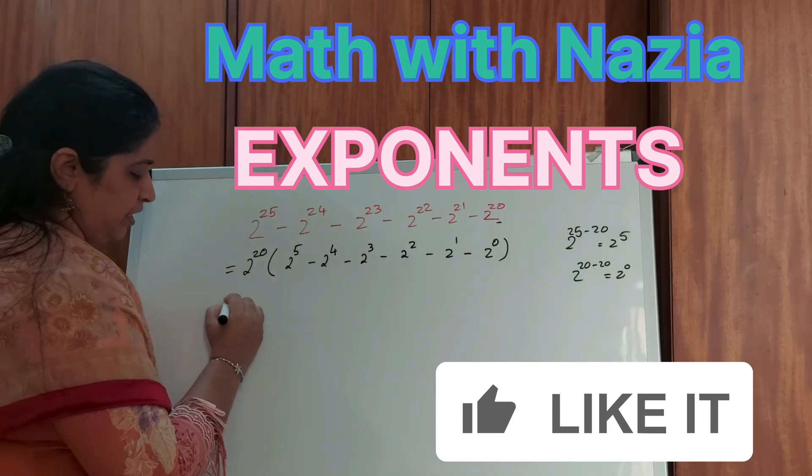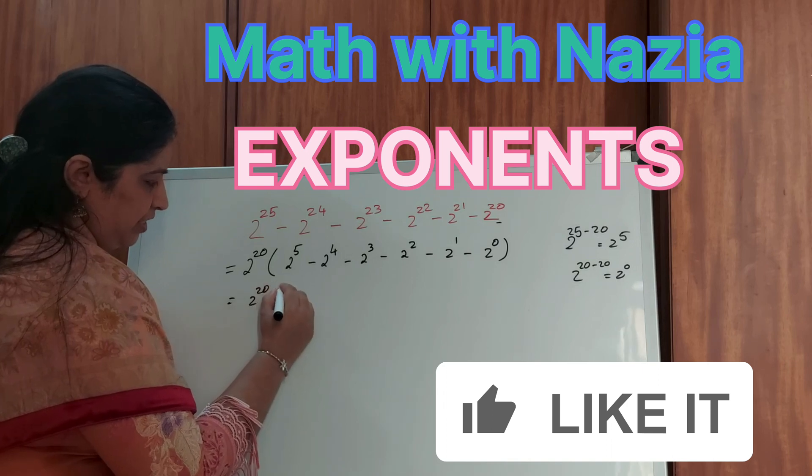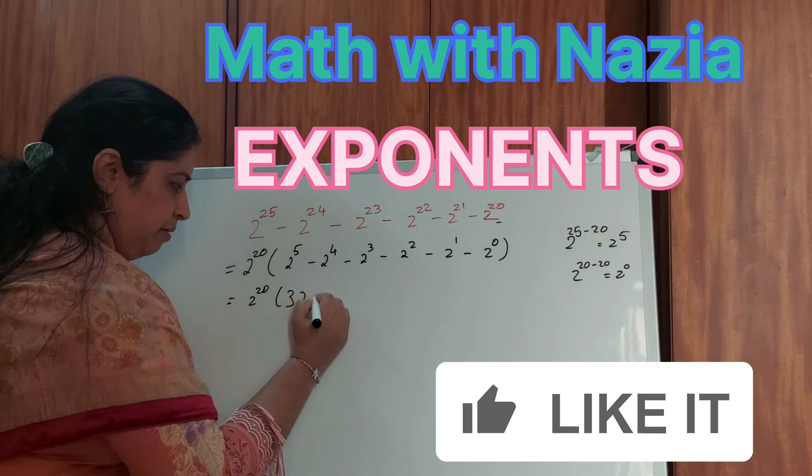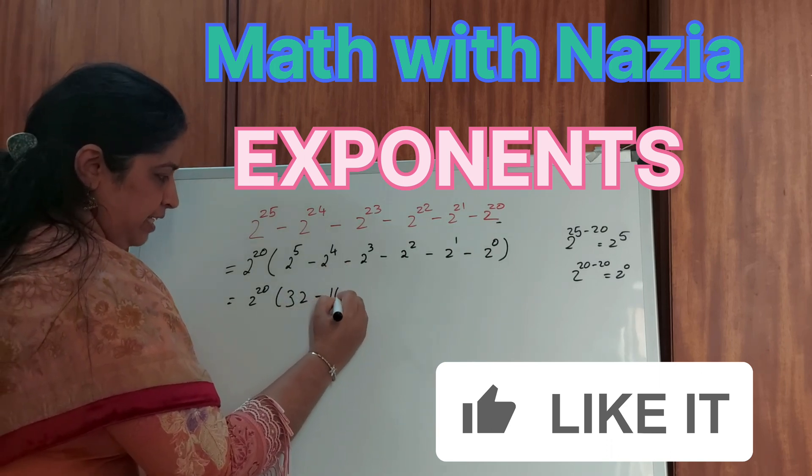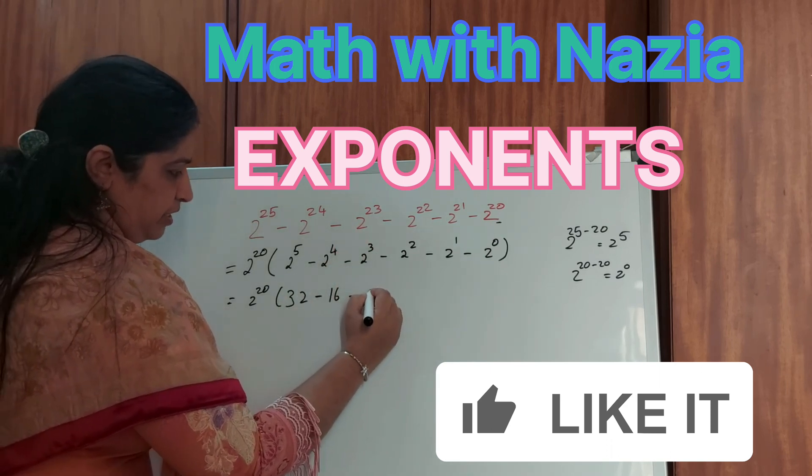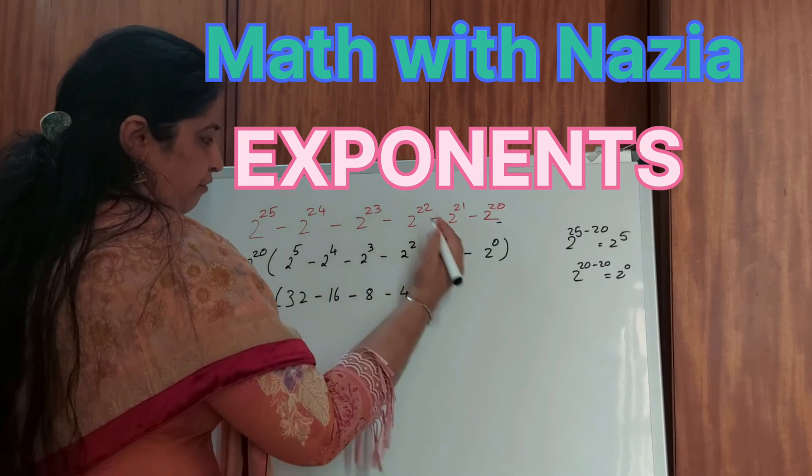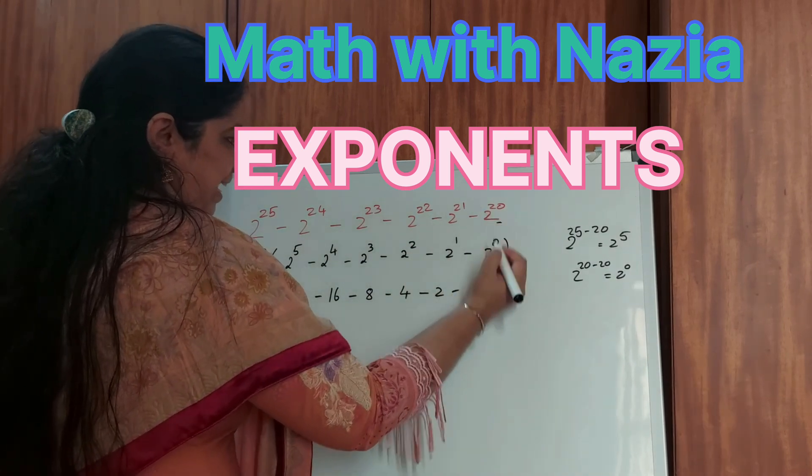Let's keep the first 2 to the power of 20 as such. 2 to the power of 5 is 32 minus 2 to the power of 4 is 16 minus 2 to the power of 3 is 8 minus 2 square which is 4, 2 to the power of 1 which is 2. And here comes the trick.